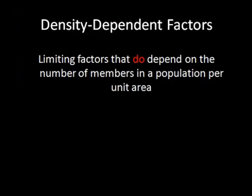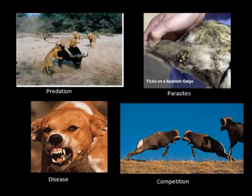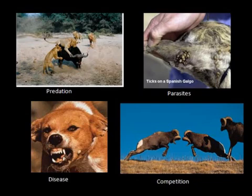Density dependent factors are limiting factors that do depend on the number of members in a population in the area. Can you think of anything that can limit how much a population can grow that depends on the population density? Predation, parasites, disease, and competition all depend on the number of organisms in an area. The population of predators will depend on the population of prey, and the same goes for parasites and hosts. Diseases are more easily spread when there are more individuals in an area, and with more individuals, you're going to have more competition for resources.